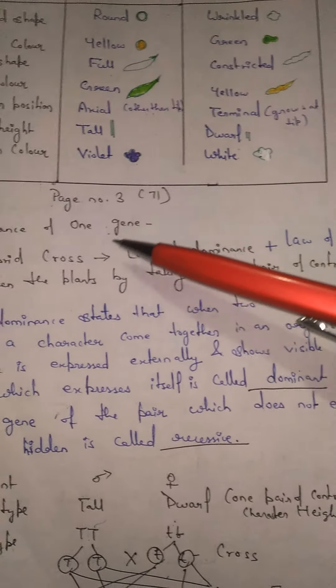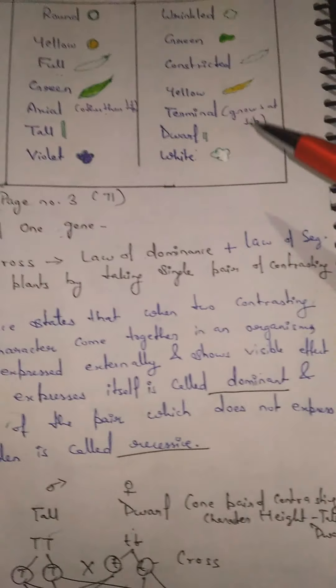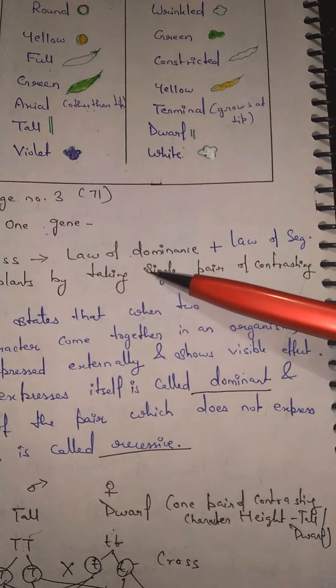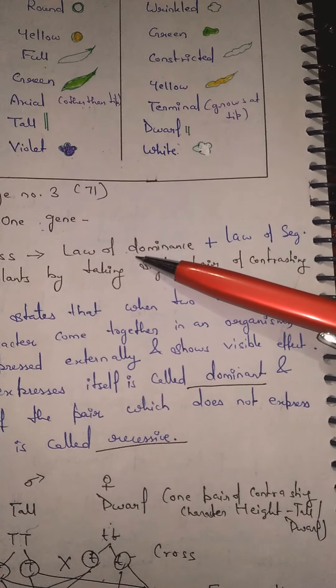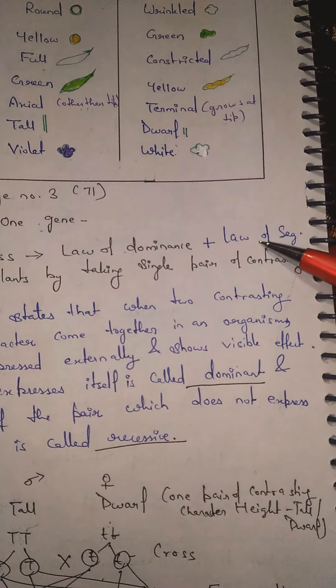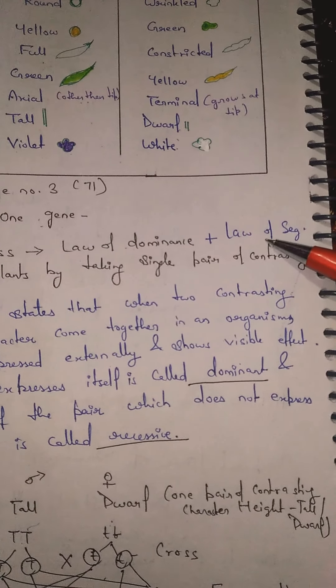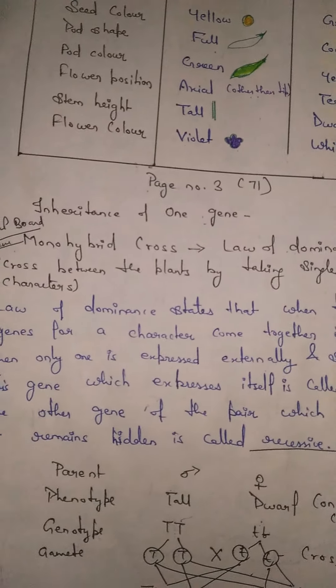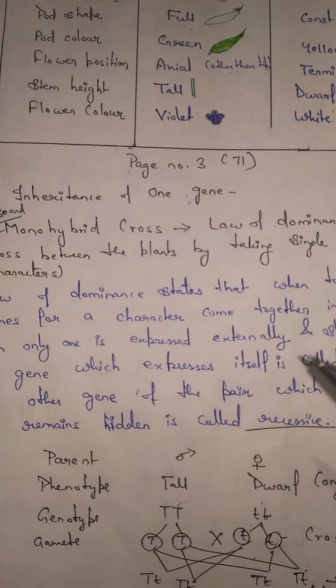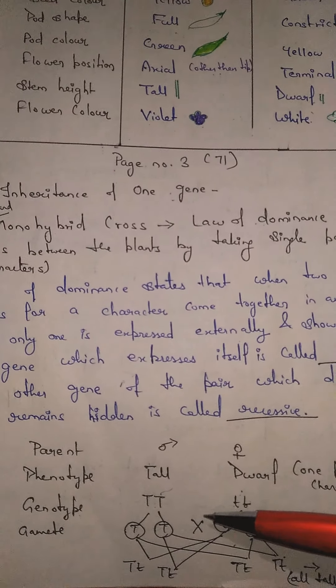So now we are going to see which laws were given by Mendel by using monohybrid cross. Two laws were given by Mendel - the first one was the law of dominance while the other one was the law of segregation. Now we have to understand what this means, so I'm just reading out the thing which is written there, then I'll explain it to you through this cross which was done by Mendel.